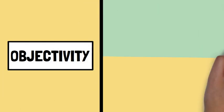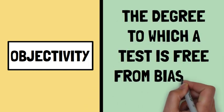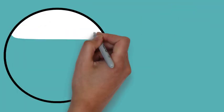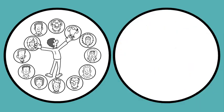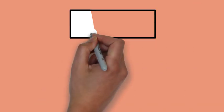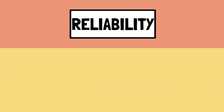Objectivity is another critical aspect of psychological testing. Objectivity refers to the degree to which a test is free from bias and subjectivity. This means that the test results should not be influenced by personal biases and subjective interpretations of the examiner. The development of objective measures is essential to ensure that test results are reliable and valid.